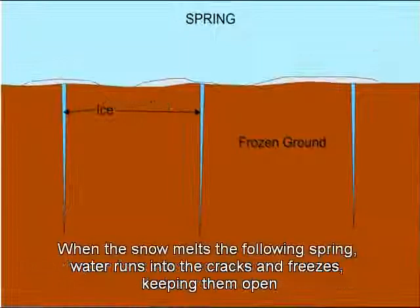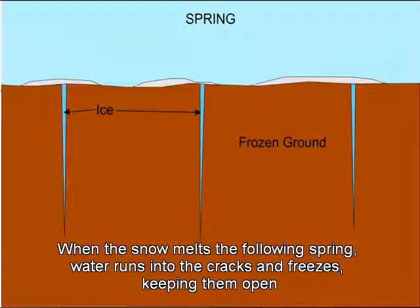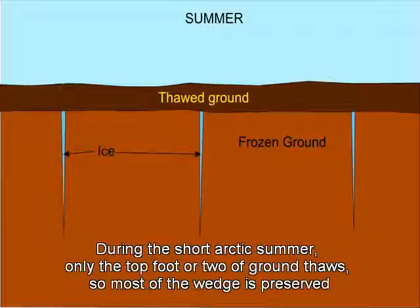When the snow melts the following spring, water runs into the cracks and freezes, keeping them open. During the short Arctic summer, only the top foot or two of ground thaws, so most of the wedge is preserved.